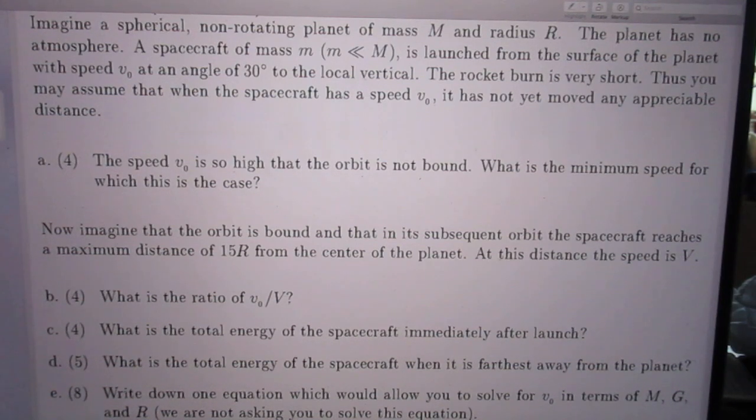Imagine a spherical non-rotating planet of mass capital M and radius capital R. The planet has no atmosphere. A spacecraft of mass small m, small m much, much, much smaller than capital M, is launched from the surface of the planet with a speed V0 at an angle of 30 degrees to the local vertical.